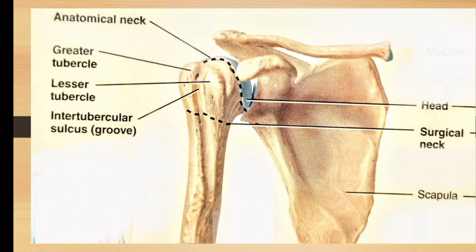Just distal to the anatomical neck, an anterior projection is called the lesser tubercle. The groove between the greater tubercle and lesser tubercle is called the inter-tubercular sulcus. The constriction just distal to the tubercles, where the head tapers to the shaft, is called the surgical neck.